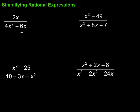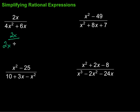Let's start with this one. On the bottom, we can do some factoring here. What do those two things have in common? Well, I can take a 2x out of both of those. So what I'm going to have on top is 2x over — I take a 2x out of the bottom — so 4x² divided by 2x is going to be 2x, and then 6x divided by 2x is going to be plus 3. So I have 2x over 2x times (2x + 3).